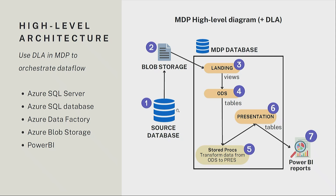In terms of the high-level architecture, this is what we had to build for the MDP. We first have the source database in the client's environment. Then the data moves into blob storage as JSON files. After that, the data is extracted into landing views in the MDP database as raw data. Transformations are then applied to the raw data into the ODS layer — ODS stands for Operational Data Store, and anything there is considered ready for use. Following that, stored procedures take the data in the ODS layer and apply further transformations into the presentation layer, so that the data is ready to be presented in reports, which is the final step.